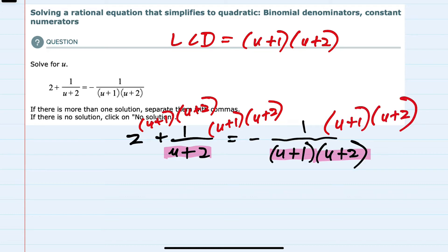And to simplify, starting with the first term, for now I'll just leave this as 2 times u plus 1 times u plus 2. For the second term, the u plus 2 is going to cancel with the u plus 2, leaving me with just 1 times u plus 1. And then on the right-hand side, both the u plus 1's and the u plus 2's cancel. So I'm left with just a minus 1.